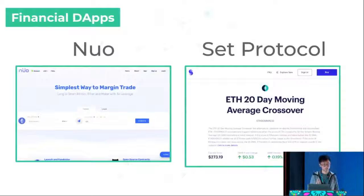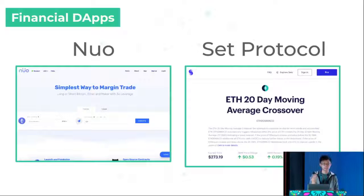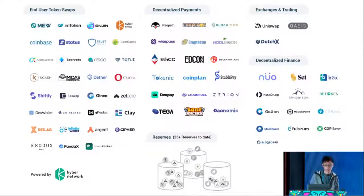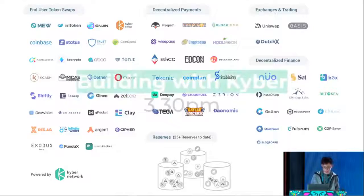The third broad category we look at is financial applications — DeFi. I'll give two examples. The first is Newdex, a margin trading protocol that has integrated with us, allowing users to leverage and have margin trading. The second example is SET Protocol, where they allow for different baskets of tokens, create products out of them, and use us for rebalancing purposes — to rebalance between one token to another. This is just a brief ecosystem map of the different applications that we have integrated with.